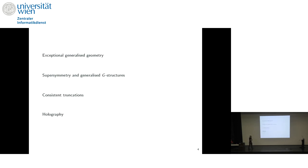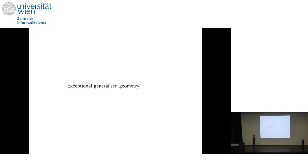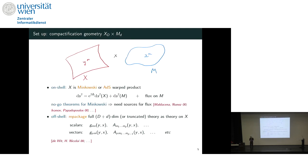I'll try to do four things. I'll start by describing what exceptional generalised geometry is. I'll then talk about an application to supersymmetry, and we'll see how to describe supersymmetric backgrounds. I'll then talk about consistent truncations — in the supersymmetric backgrounds, we'll see how to calculate moduli of flux backgrounds we couldn't before. Then I'll talk about consistent truncations and understanding spectra. And then I'll talk about holography and understanding the marginal deformations of supersymmetric backgrounds.